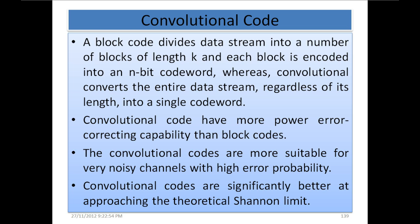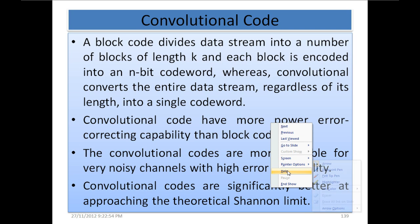In convolutional coding, rather than taking a block to encode individually, the entire data stream is converted into a single codeword. Convolutional codes have more powerful error-correcting capability than block codes. This is the main advantage of using convolutional codes.